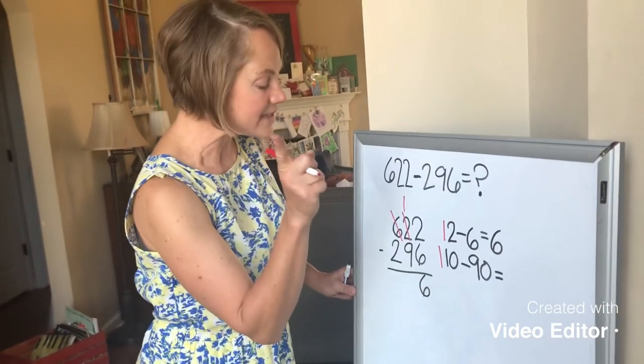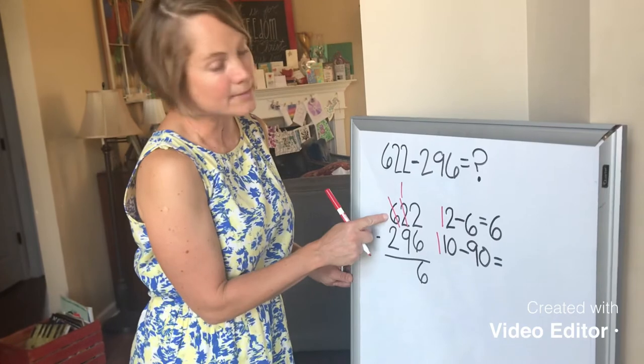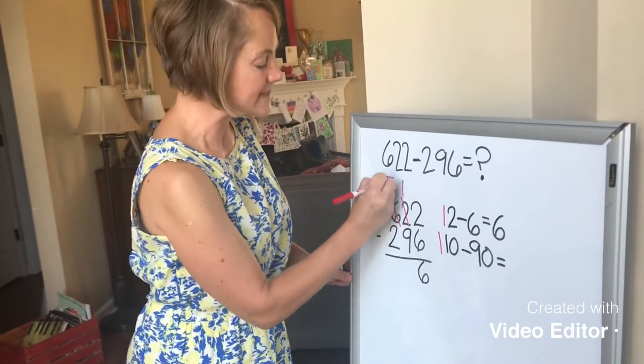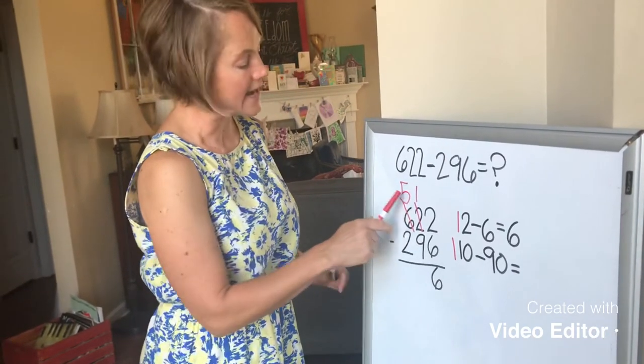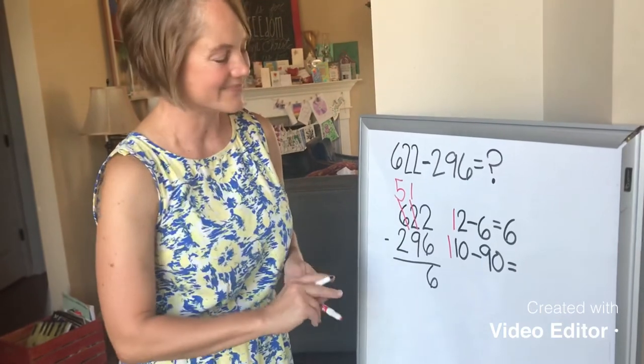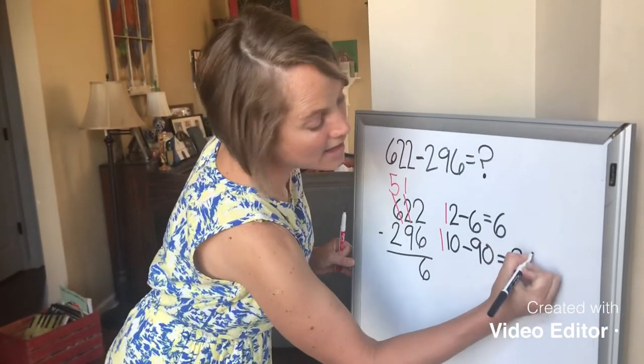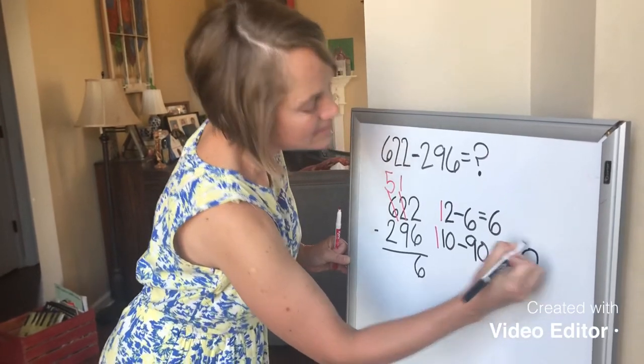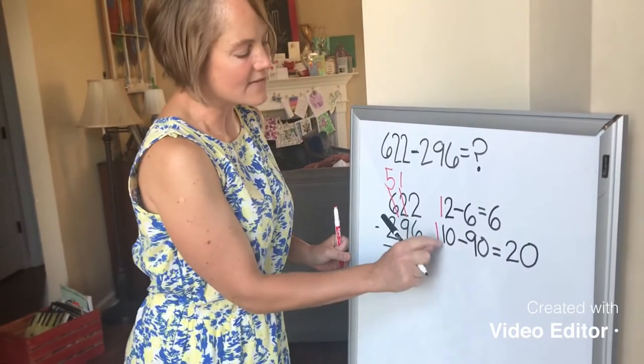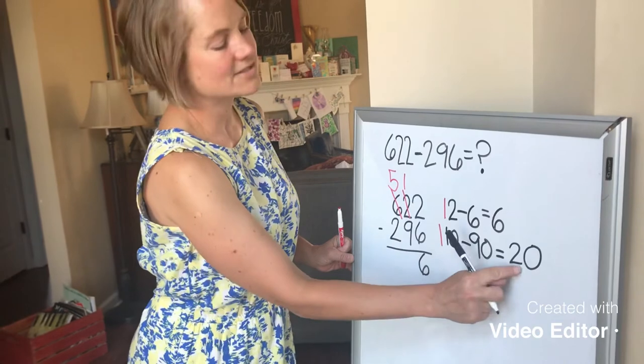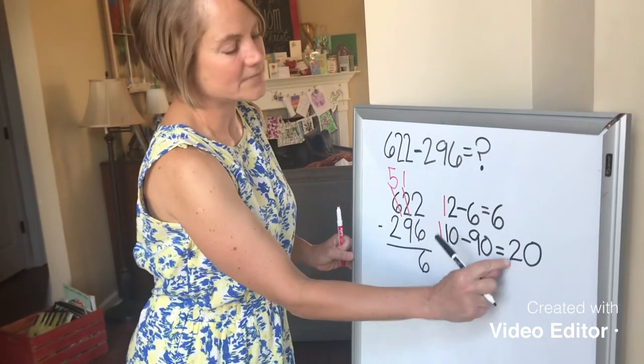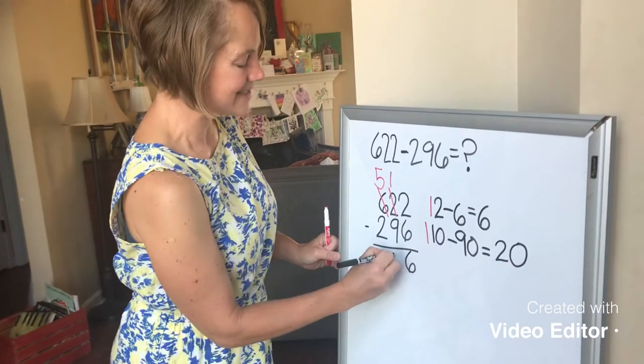But before I solve it, I can't forget that I borrowed one of my 100s, which means I only have 500 left. And I have to write it there so I don't forget. All right, 110 minus 90 equals 20. I know that 100 minus 90 would be 10, and I've got this extra 10 here. So that's going to give you two 10s, 20. And the 2 goes in the 10s place.